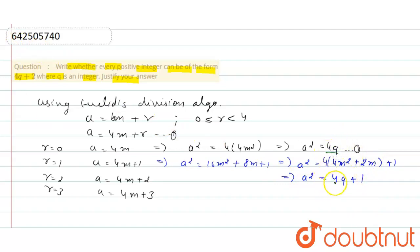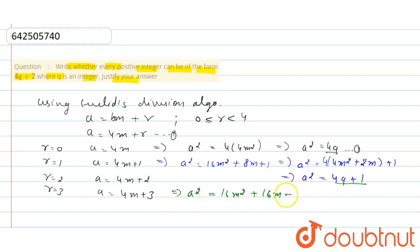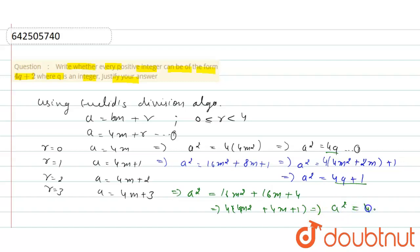So we have two forms so far: 4q and 4q plus 1. Now for 4q plus 2: if we square A equals 4m plus 2, we get a² equals 16m² plus 16m plus 4. Taking 4 as common gives 4(4m² plus 4m plus 1), and putting this in brackets as q, we get a² equals 4q.